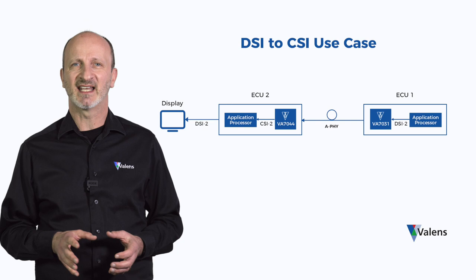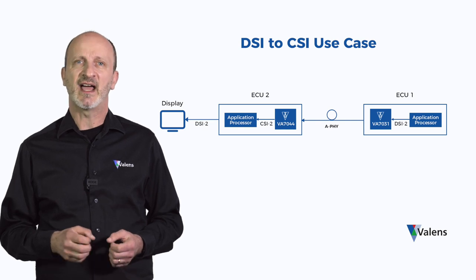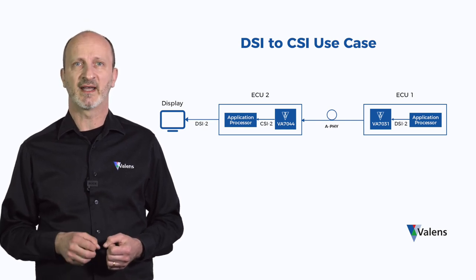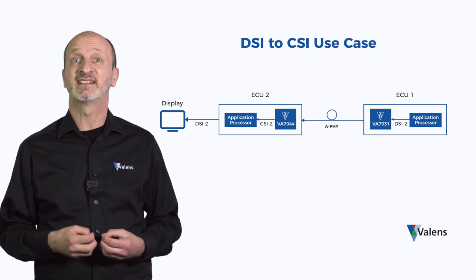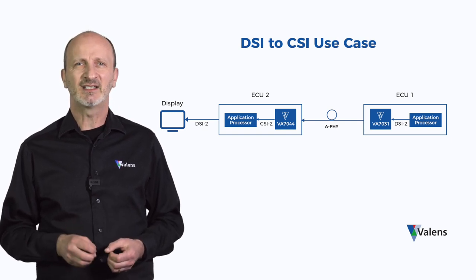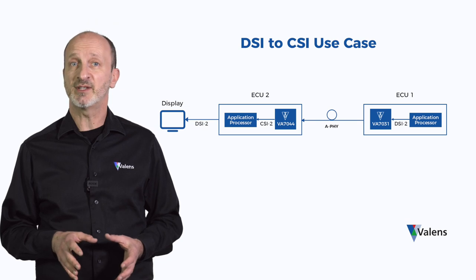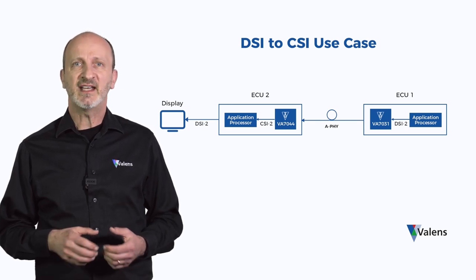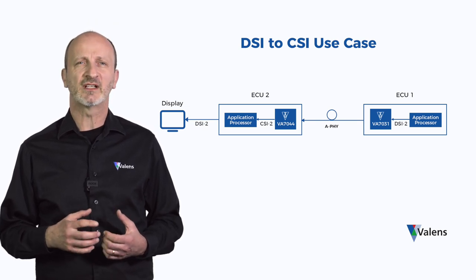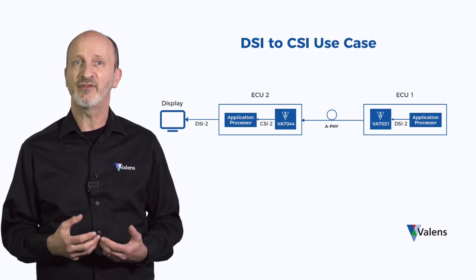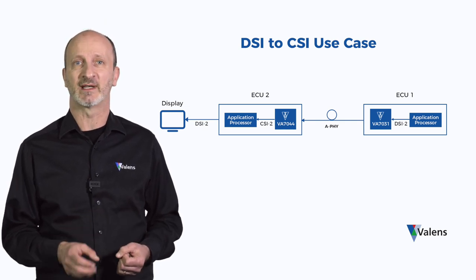The first ECU in the chain has an application processor that outputs the data in DSI format, while the receiving ECUs are expecting a CSI input. This is where the Valence VA7000 chipsets come into play. The VA7031 can be configured to output the DSI stream over the MIPI AFI, which is a CSI2 extension. MIPI AFI solutions are designed to meet the needs of future autonomous driving car networks, supporting complex topologies, high bandwidth, and strict safety requirements.